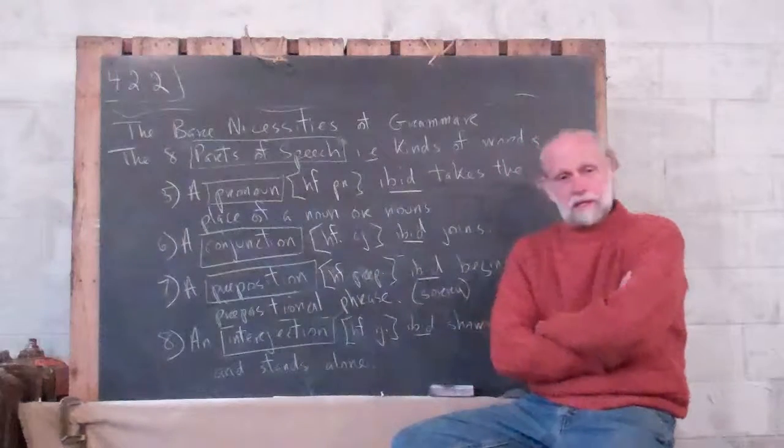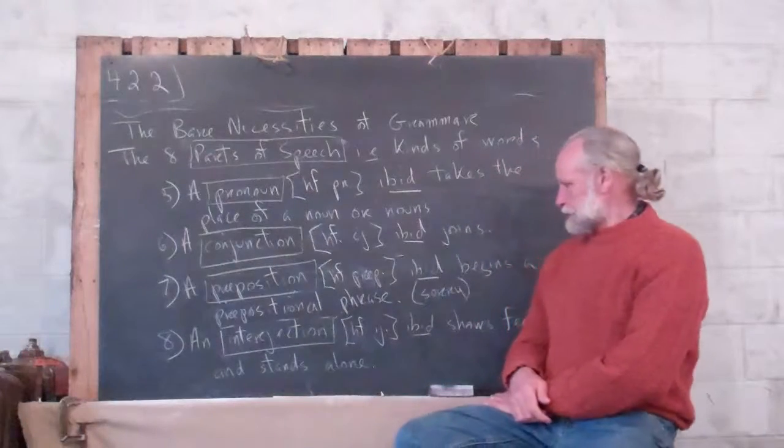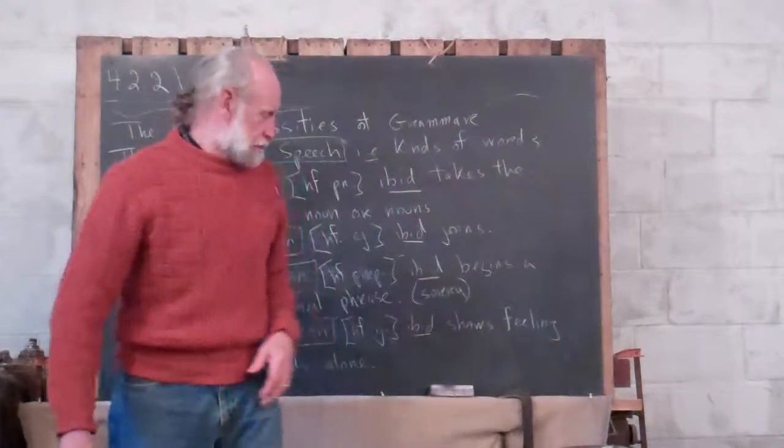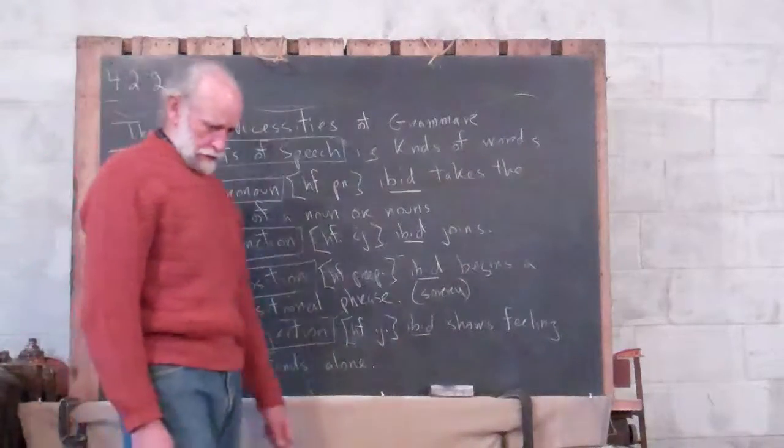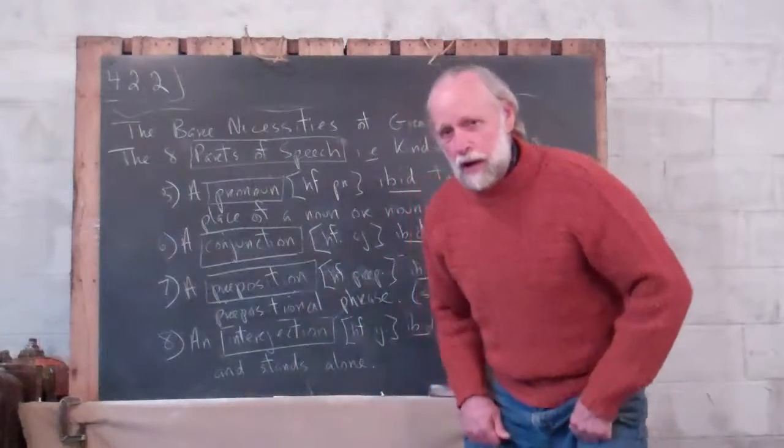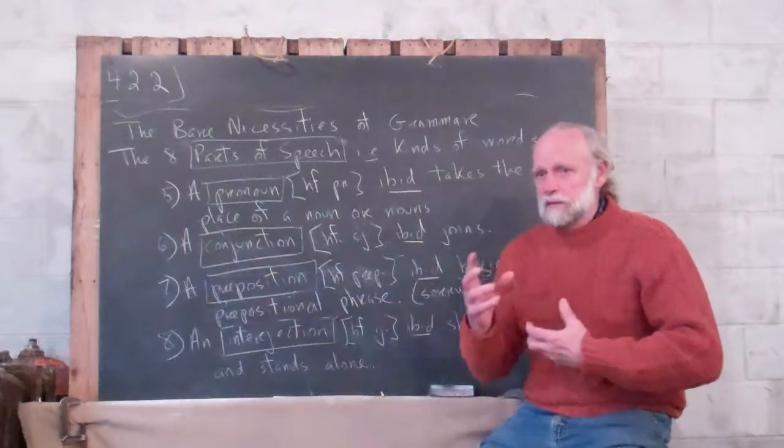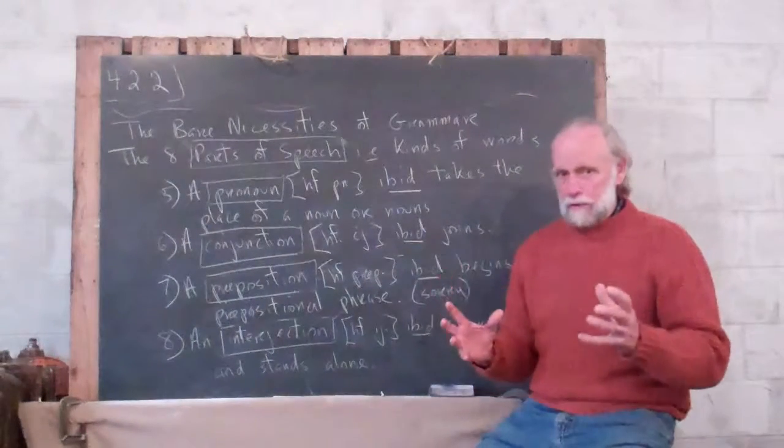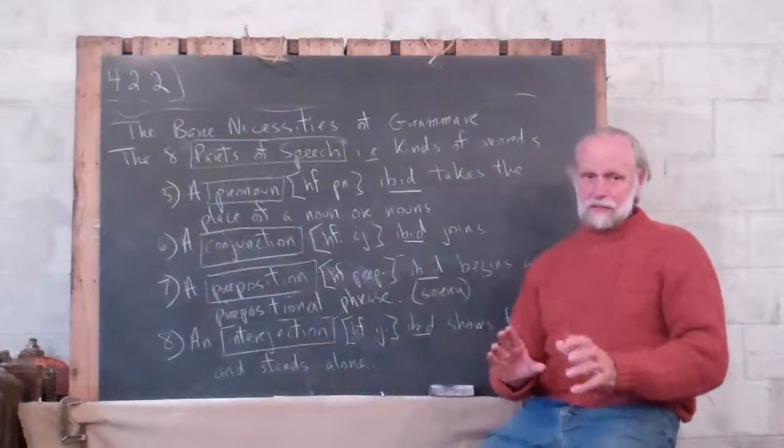And then finally, the eighth one, an interjection, henceforth IJ. An interjection is a word that shows feeling and stands alone. And they both have to be there. Because if you have a word like sad, that shows feeling, or happy, I am happy. Well, happy is an adjective. That's modifying I. That's not an interjection. It's knit up in the sentence. An interjection stands alone, like wow, I am happy. Well, the wow is not knit up into the sentence. It stands alone.